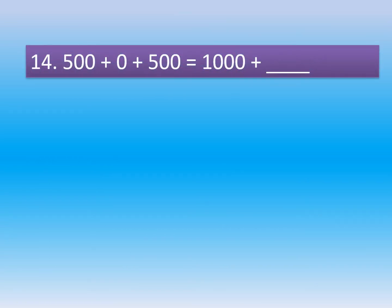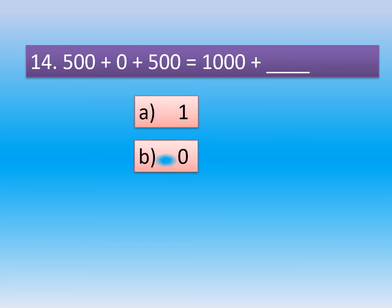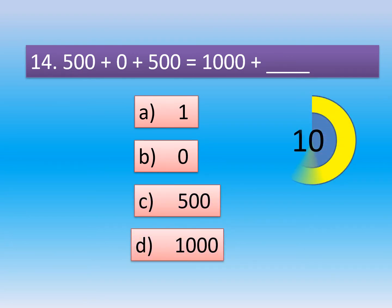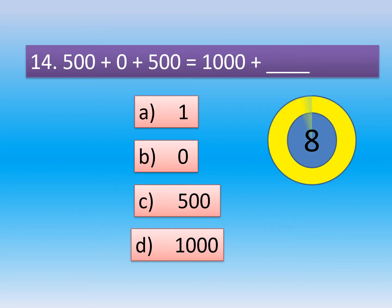Question number 14. 500 plus 0 plus 500 is equal to 1000 plus dash. Option A: 1. Option B: 0. Option C: 500. Option D: 1000.